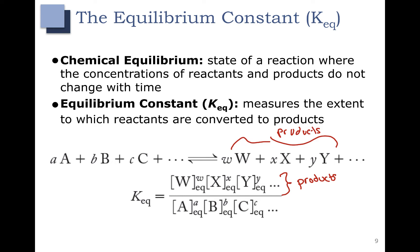Remember that equilibrium means the concentrations aren't changing anymore. Your reaction might have had some initial concentration, but once it gets to equilibrium, those are the concentrations we're talking about. Our reactants are on the bottom. This is how you get to the Keq expression, or the equilibrium constant.